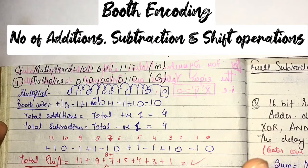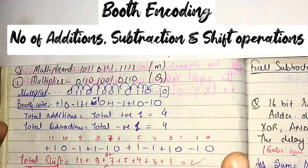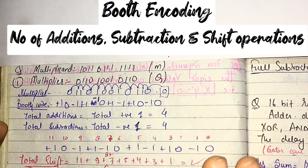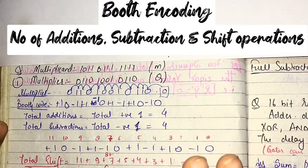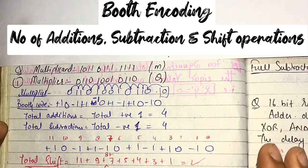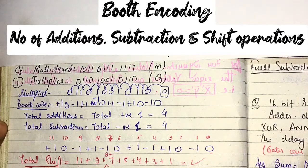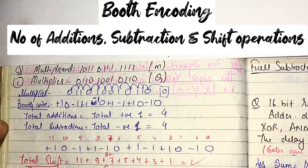I hope you guys understood this topic thoroughly. The main purpose is to calculate the Booth encoding of a number, as this type of question is asked in GATE for one mark. In the next video I will cover the Booth multiplication algorithm, which will explain why we use Booth algorithm instead of normal multiplication. Thank you.